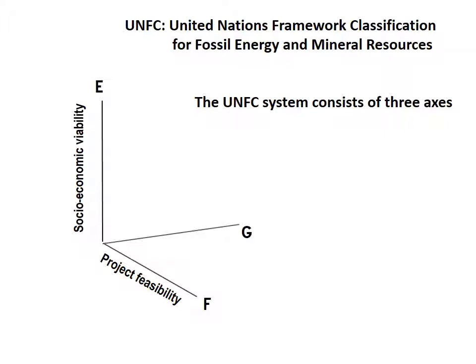The UNFC classification system consists of three axes: a first axis assessing the viability of socio-economic aspects of a project, the so-called E-axis; a second axis displaying the status or feasibility of development of a project, the F-axis; and a third axis displaying the level of geological knowledge required to develop a project, the G-axis.